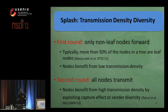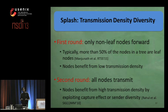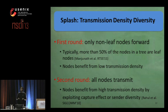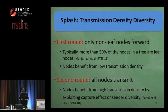The rationale is that, as typically more than 50% of the nodes in a tree are leaf nodes, when such a significant percentage of nodes do not participate in forwarding, we expect nodes to experience low transmission density, thus alleviating the scalability problem.